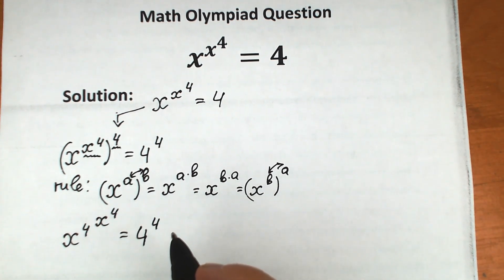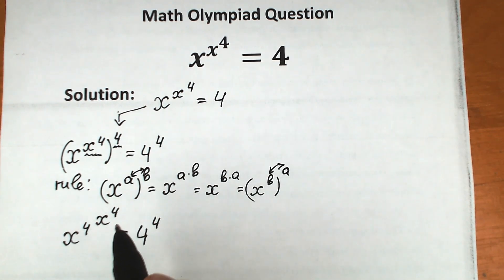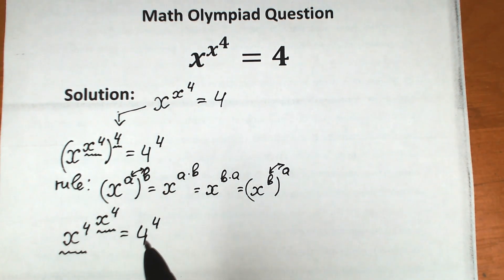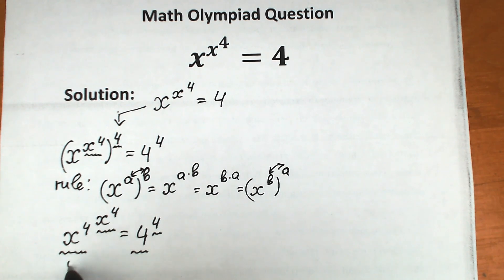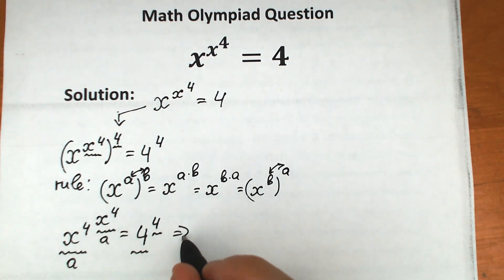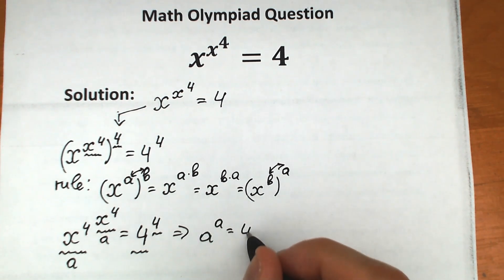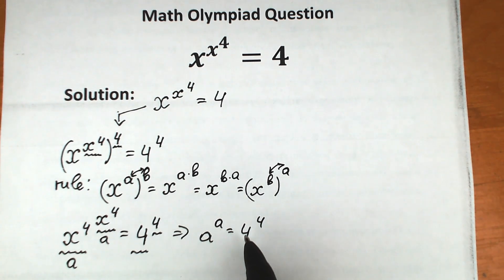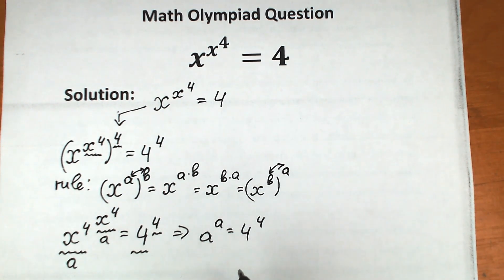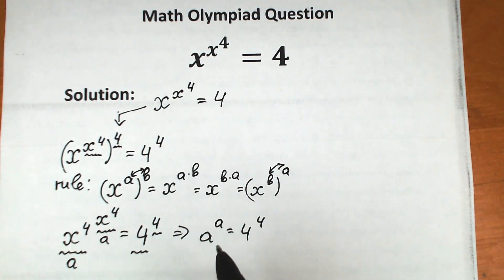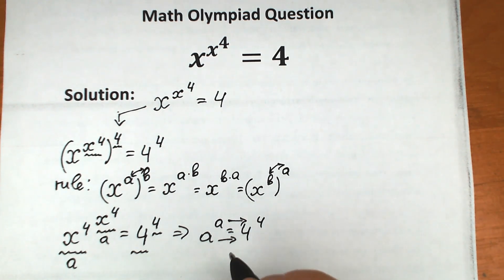This is the hardest step. We can see we have x to the power 4 appearing as both the base and the exponent — same base and same exponent. If we substitute a for x to the power 4, we get the equation a to the power a equal to 4 to the power 4. The one and only way this equation has a solution is when a equals 4, since both sides have the same base and same exponent. So a equals 4.